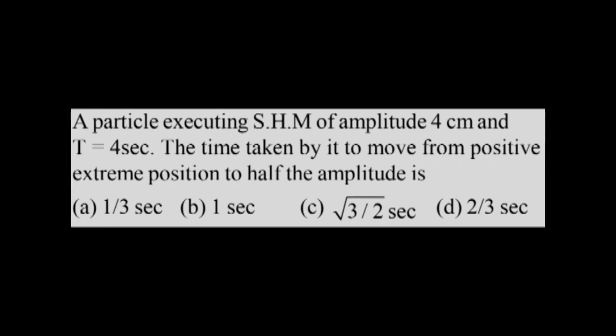A particle executing simple harmonic motion has amplitude 4 centimeters and time period 4 seconds. The time taken to move from positive extreme position to half the amplitude is — option A: one-third second, option B: square root of three by two seconds, option C: two by three seconds.